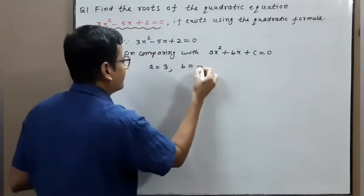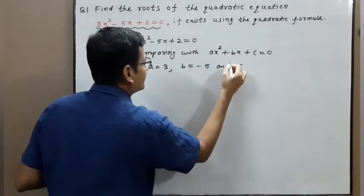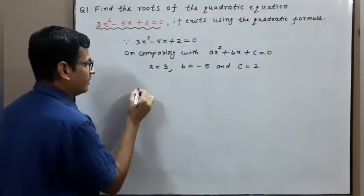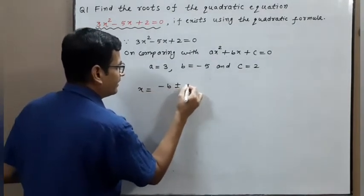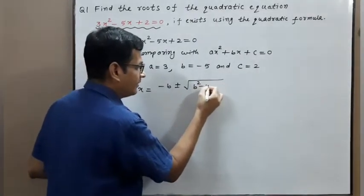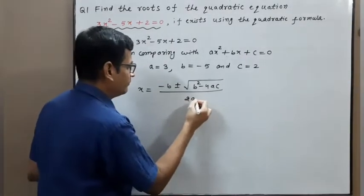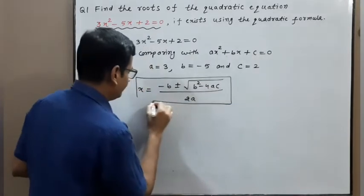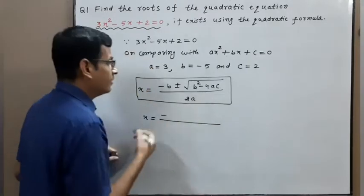The coefficient of x gives b equal to minus 5, and the constant term gives c equal to 2. Now applying the quadratic formula: x equal to minus b plus or minus root of b squared minus 4ac, upon 2a.